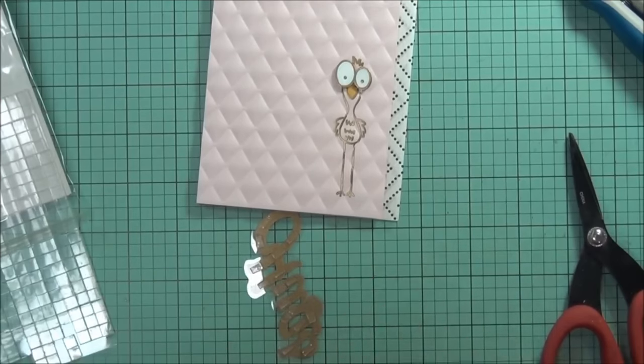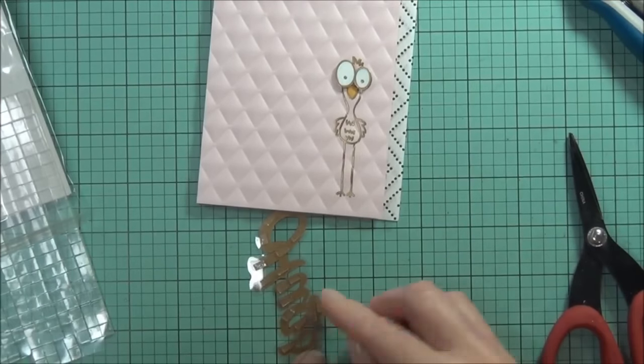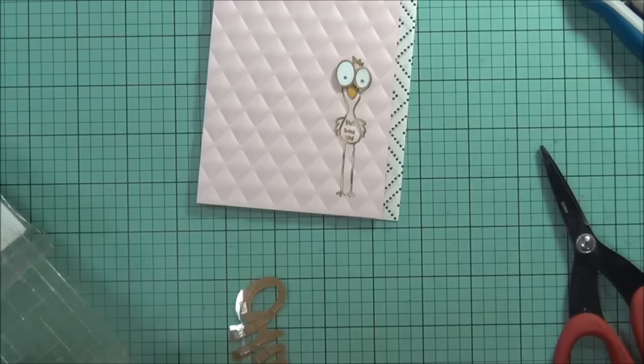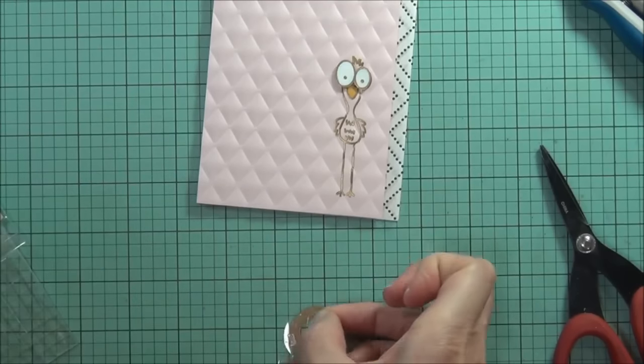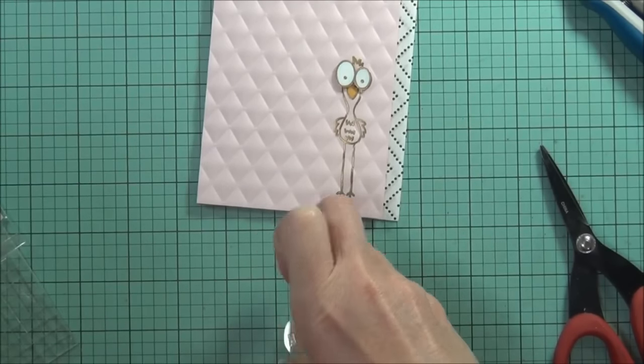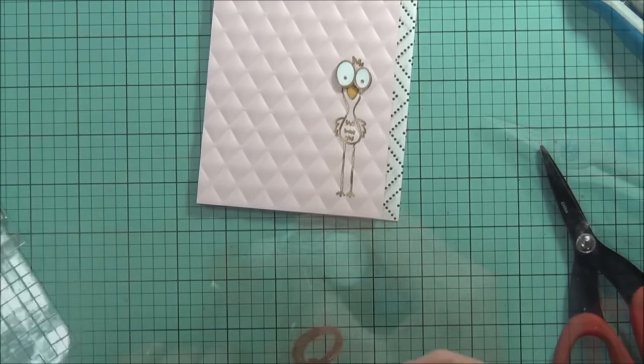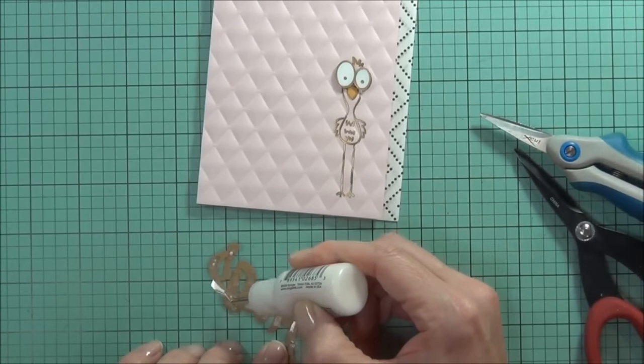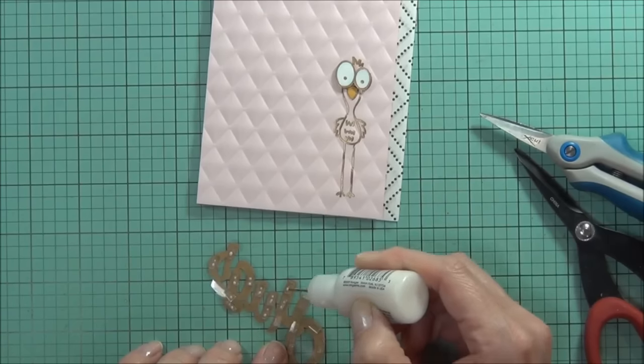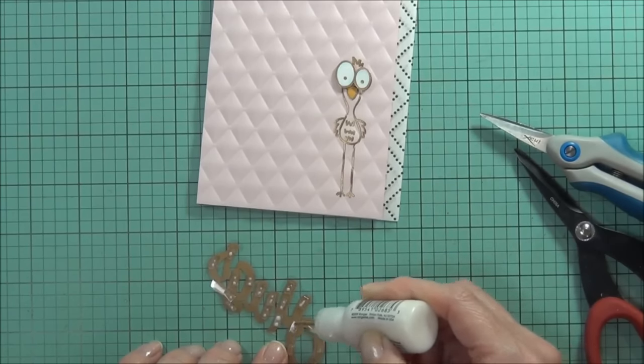There was a few ways I thought I could have attached this hugs sentiment. I'm using these horrible clear pop dots that I've got and I'm cutting them small. They don't stick very well so I hate using them, but I really wanted this to sit up off the card front. So what I've done is added a bit of multi-mat medium to the back just to make sure that it stays.